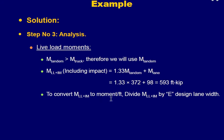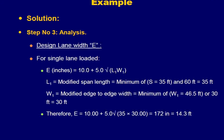To convert the live load plus impact moment to moment per unit width (kip·ft per ft), we divide by the design lane width. For single lane loaded, l1 = minimum of S (35 ft) and 60 ft = 35 ft, and w1 = minimum of the modified edge-to-edge width (46.5 ft) and 30 ft = 30 ft. Substituting l1 and w1 into the equation gives a design lane width E = 14.3 feet for the single-lane case.